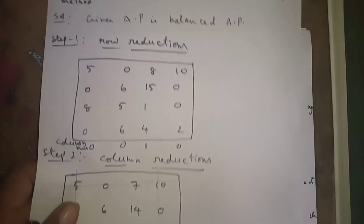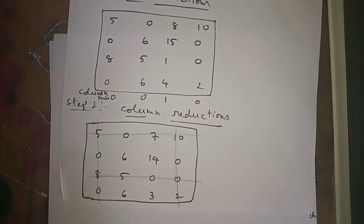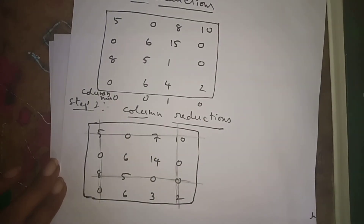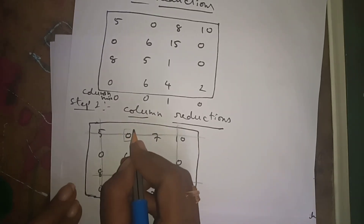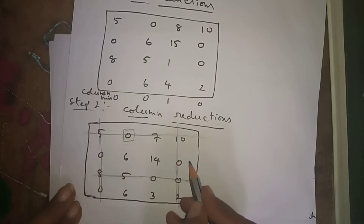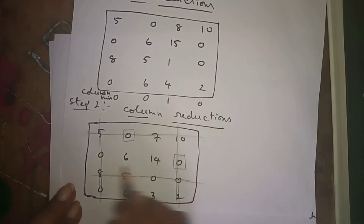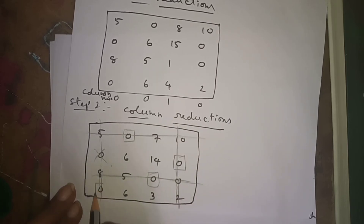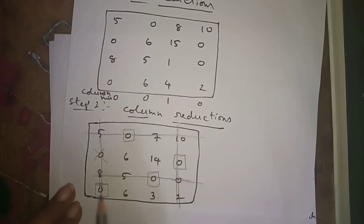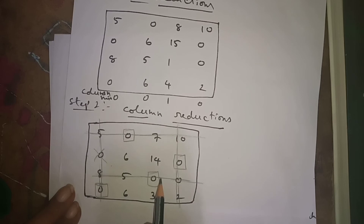Now we have to find the boxes. We draw boxes such that there is only one box in each row and each column. Drawing the first box here, second box here, third box here, and fourth box — each row and each column has only one box.